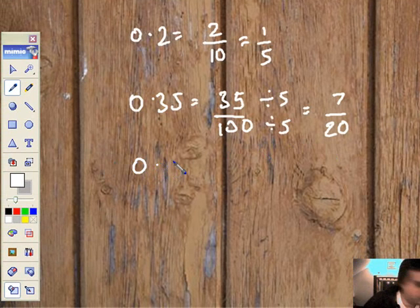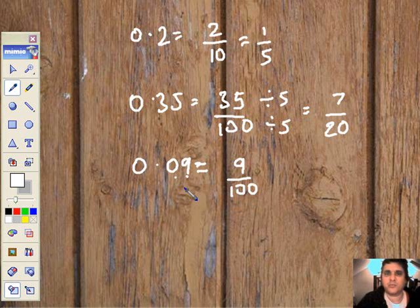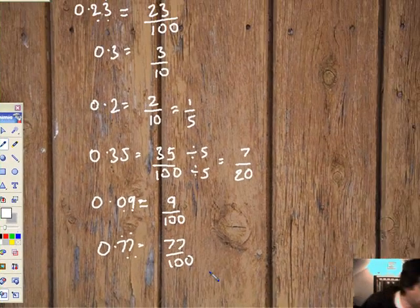Over here, we've got 0.09. Not 9 tenths, but in fact, 9 over 100, because we have two decimal places there. So that's tenths, that's hundredths, we have 9 hundredths. We'll do this next one. We've got 0.77. That's going to be 77 out of 100, because we have two decimal places there. So we've got 77 hundredths.